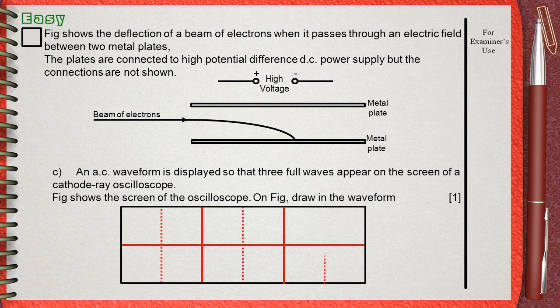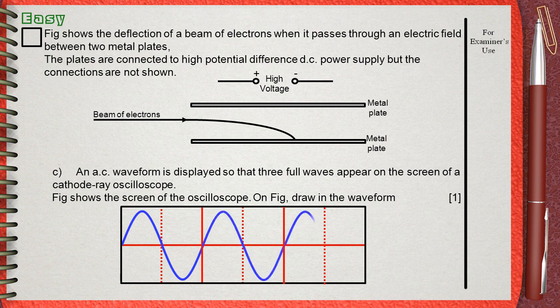Let's start with the first wave. This peak represents one half of the wave, and this trough represents the negative half of the wave. What you see now is one complete wave. We will repeat this two times for the two other waves.